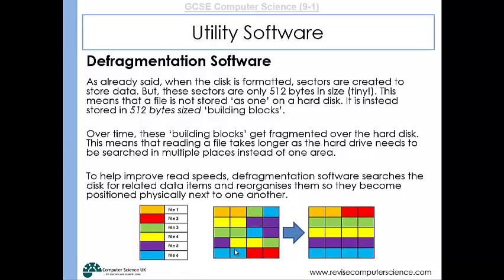After defragmentation the computer can read the data much faster. Here's an example: files one to six of different colours are split up into building blocks and positioned where there's space on the hard drive, but not necessarily next to each other. After defragmentation, all of each file's data is stored physically next to each other, so it's easier for the computer to read and performance can increase.